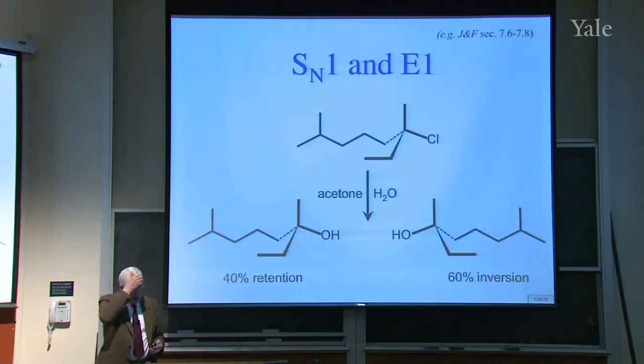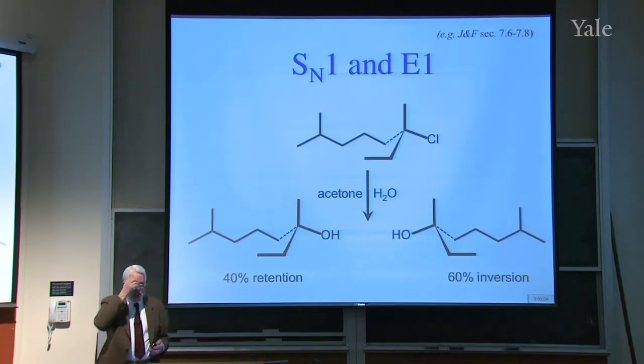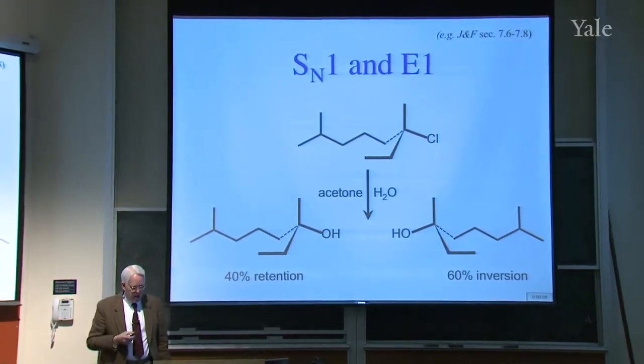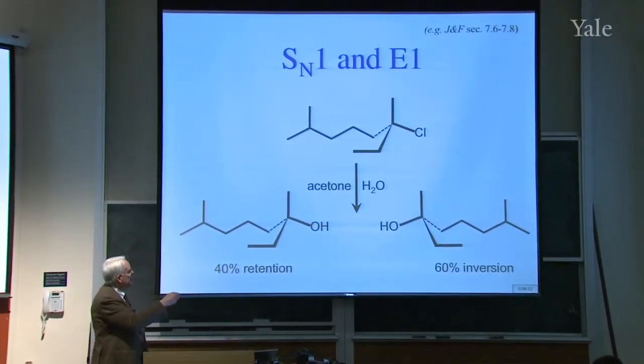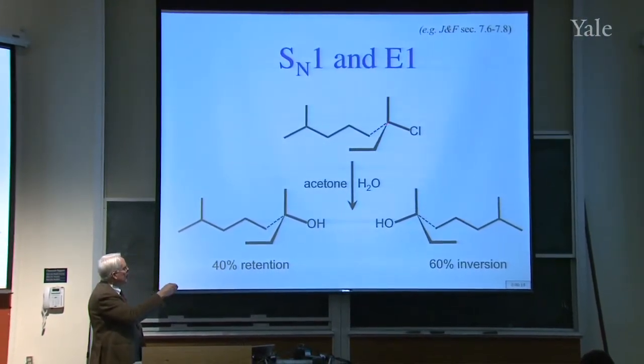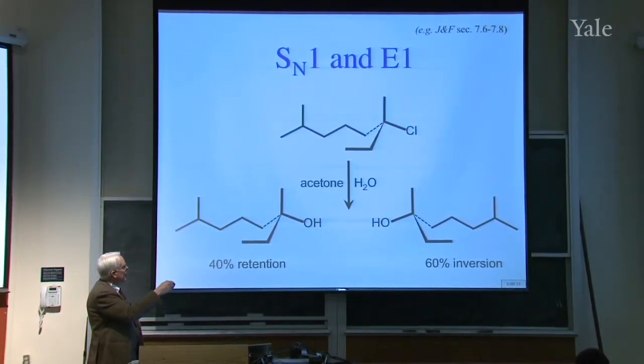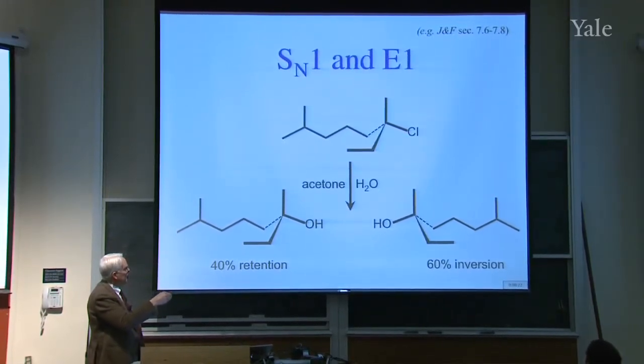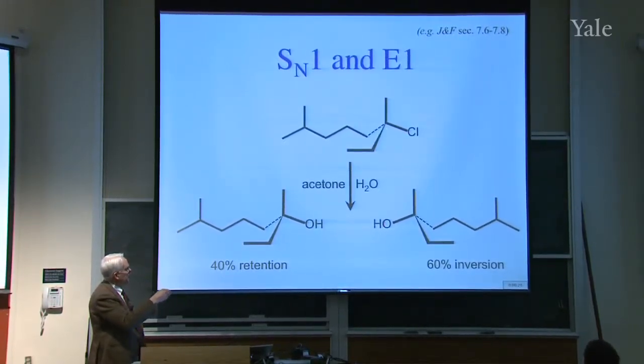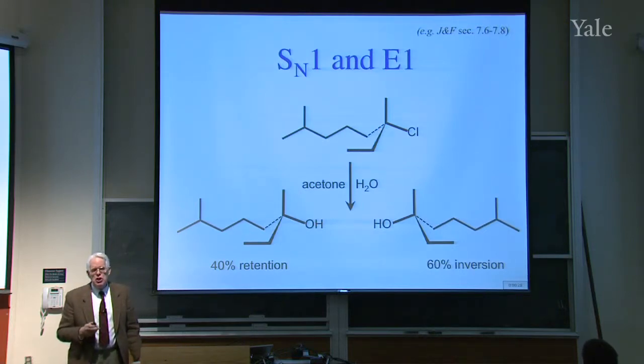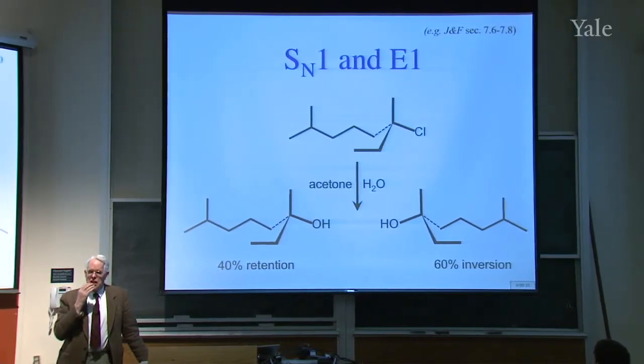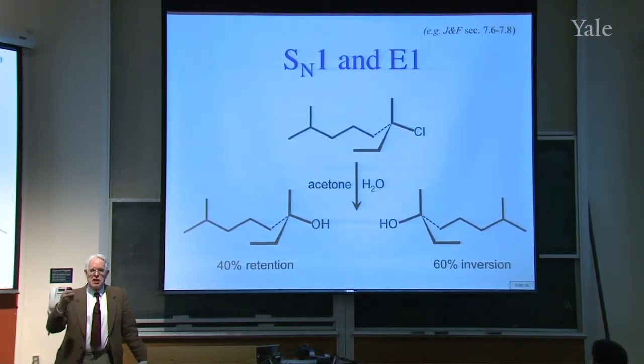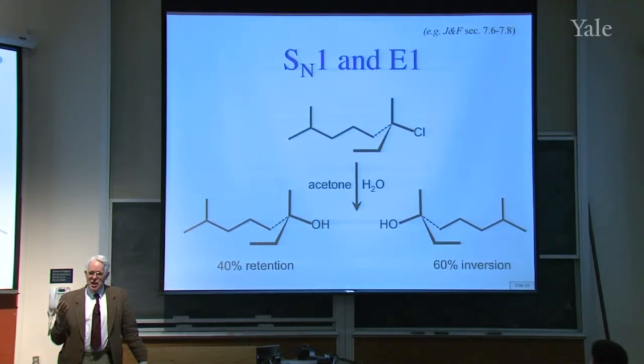Now, SN1 and E1, there's an interesting thing about the stereochemistry of SN1 reactions. If you substitute the chloride here on this tertiary chloride, you could imagine getting either the OH group substituting directly where the chloride was, or the OH on the opposite face. What would you expect if it was SN1?